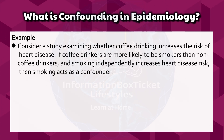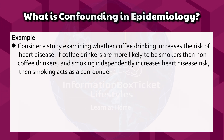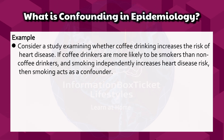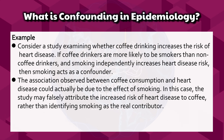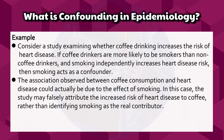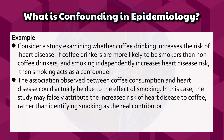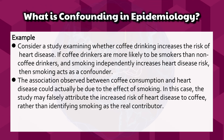For example, if coffee drinkers are more likely to be smokers than non-coffee drinkers, and smoking independently increases heart disease risk, then smoking acts as a confounder. The association observed between coffee consumption and heart disease could actually be due to the effect of smoking. In this case, the study may falsely attribute the increased risk of heart disease to coffee, rather than identifying smoking as the real contributor.